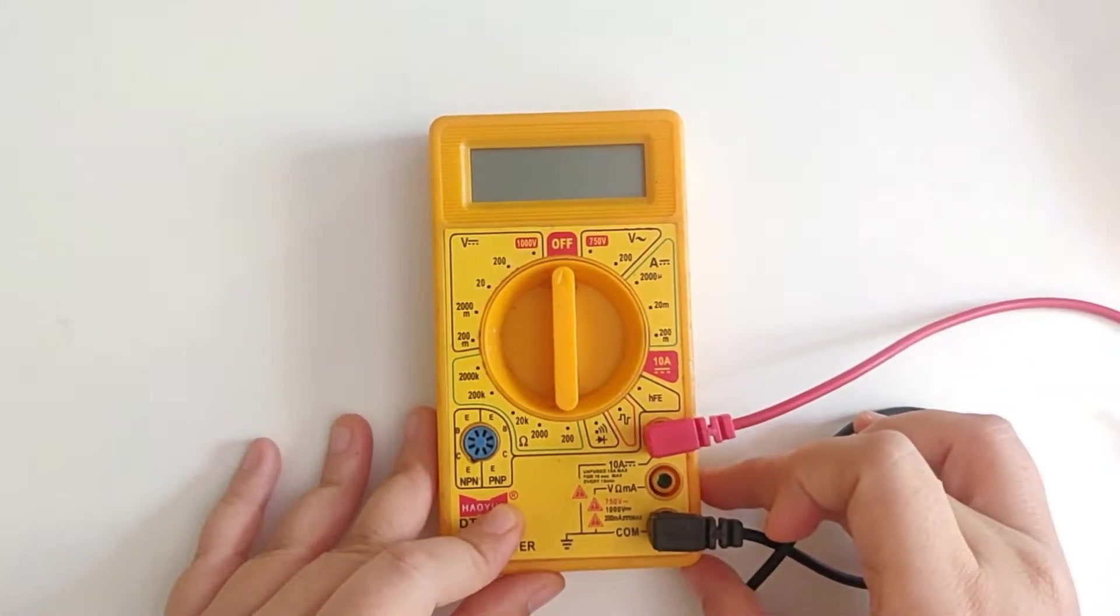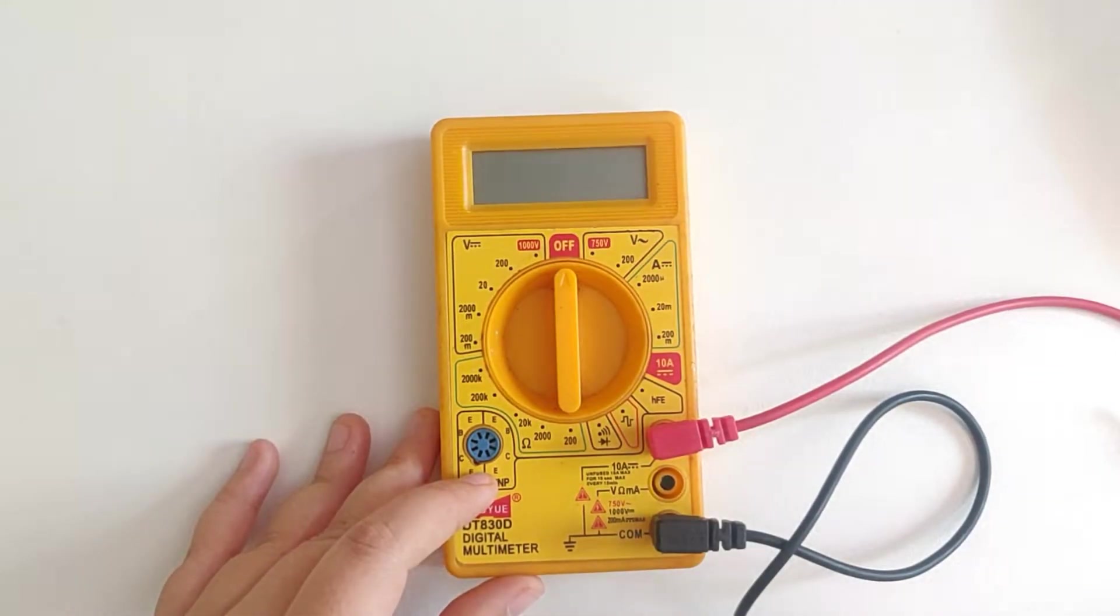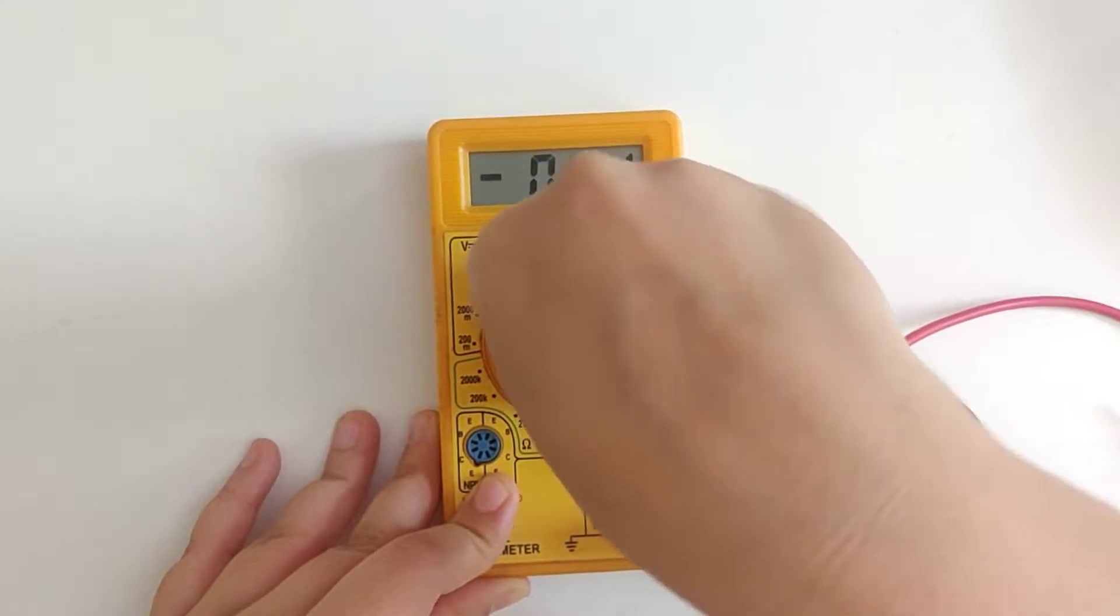And if the value of the current seems to be under or equal to 200 milliamperes, then you can always switch back to the 200 milliamperes port. But when you aren't too sure, start with the 10 amperes port.